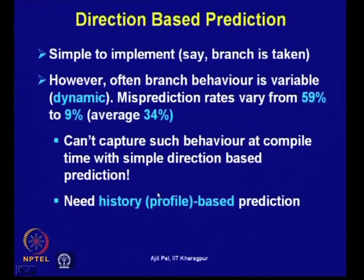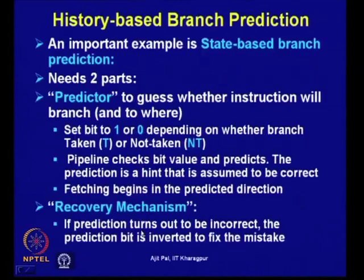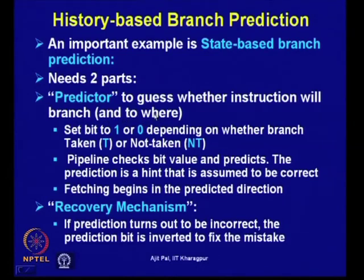In a history-based approach, as the program is executed, prediction is done based on history or profile, and some information must be maintained in hardware. An important example of history-based branch prediction is state-based branch prediction. It requires two parts: a predictor, which tries to guess whether an instruction will branch and where it will branch, and it sets a bit to 1 or 0 depending on whether the branch is taken or not taken.